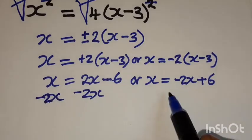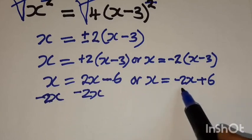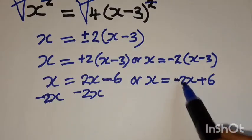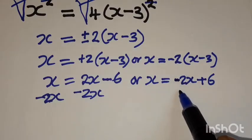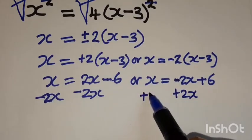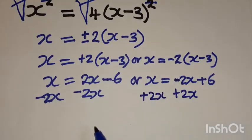Then even here, we'll add, because this is a negative 2x. So for us to eliminate this 2x, we are going to add 2x. Even here, 2x.